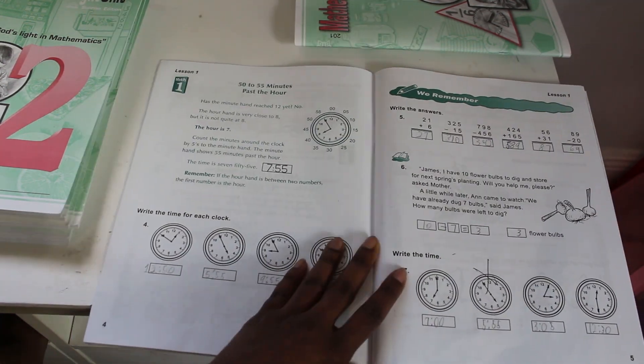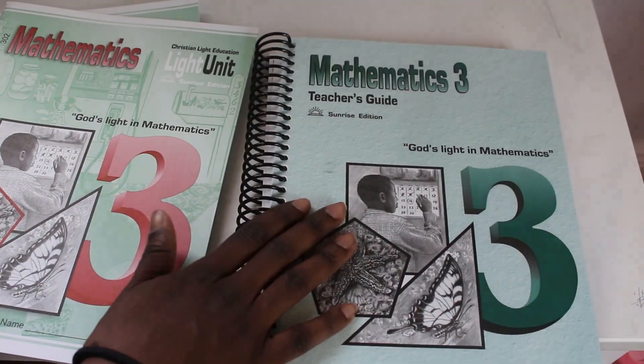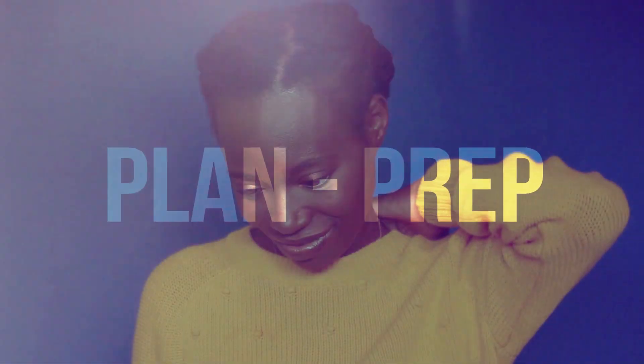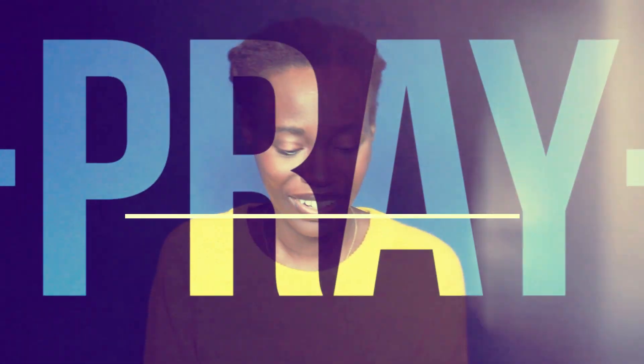So you guys asked for it, and here it is, a thorough flip-through of the Affordable Christian Life Education Level 2 and Level 3. Welcome to Plan, Prep, Pray.